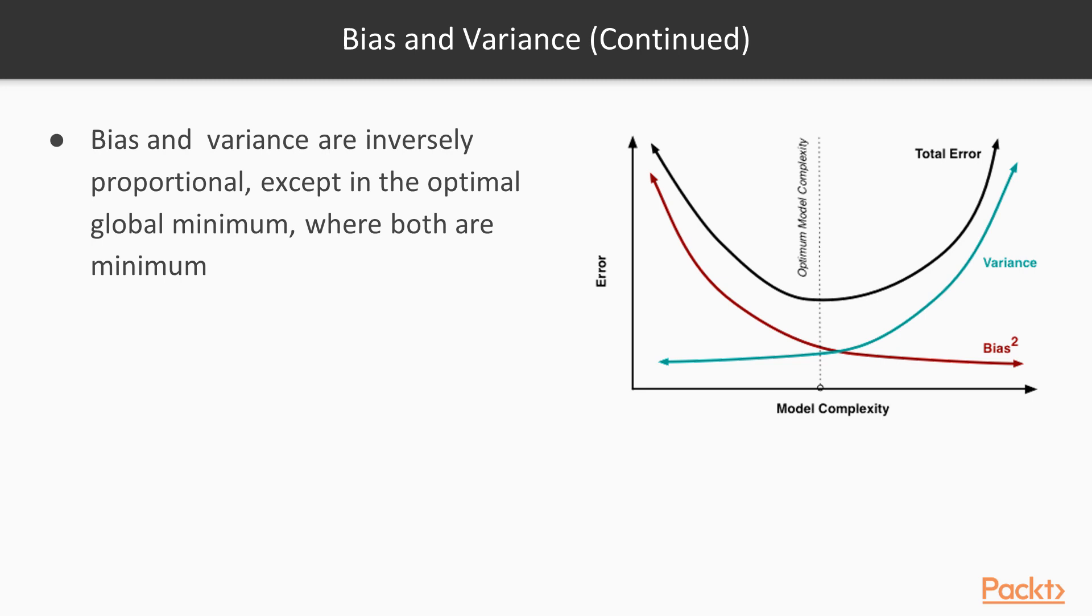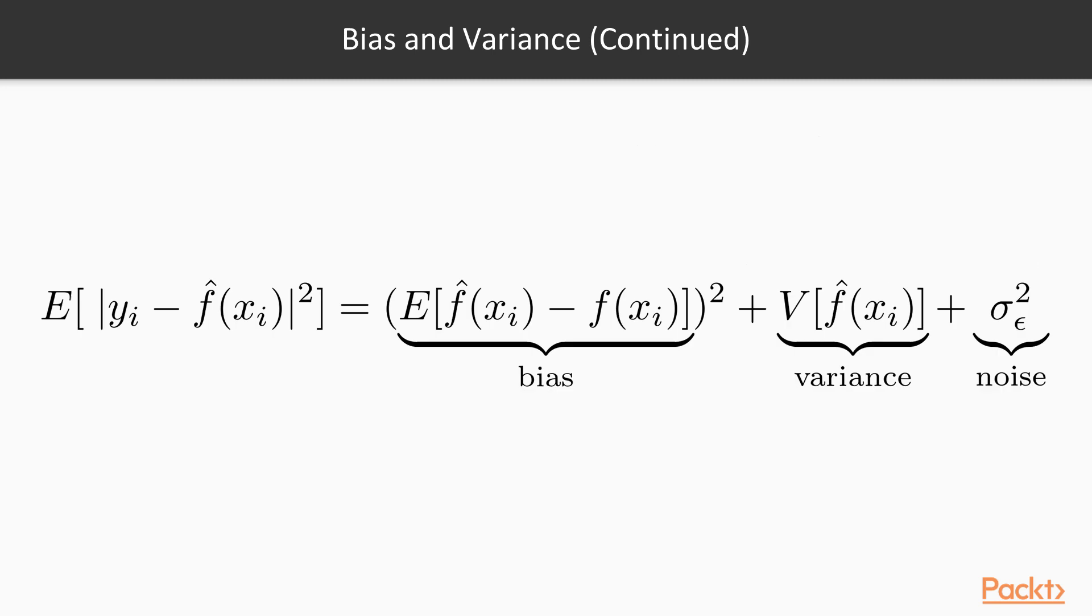Bias and variance are mostly inversely proportional except in the optimal global minima where both are minimum. The total error is the sum of both bias and variance. Here you are a general formula that represents bias, variance, and noise. You will become familiar with this notation since error is usually the square of the difference between the ground truth y and the prediction response y bar. Sometimes y bar is annotated as f of x. Don't memorize the equation, but try to let it sink down your mind and give it enough thought.